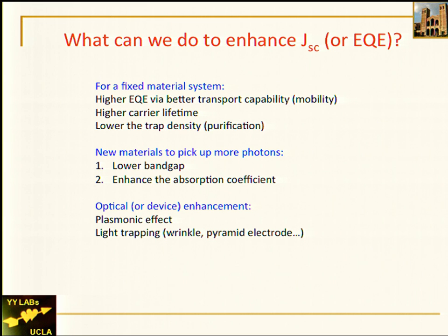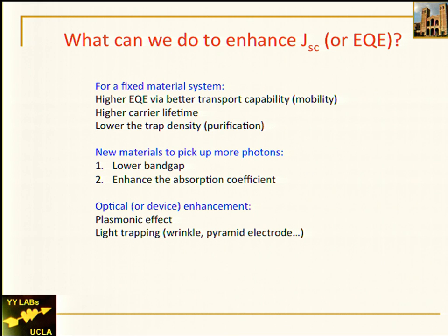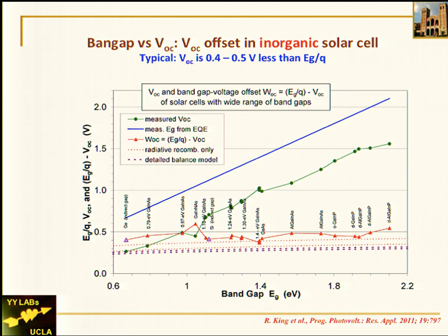Enhancing absorption coefficient is important because most organic photovoltaic polymer films are only about 100 nanometers thick — not thick enough, so we miss a lot of photons. If we can achieve higher mobility, we can make the film thicker and also enhance absorption. Other approaches include optical enhancement through plasmonic effects or light trapping — recently groups from Guo and Loo at Princeton have discussed wrinkle systems, and pyramid electrodes have been popularly used in inorganic systems.